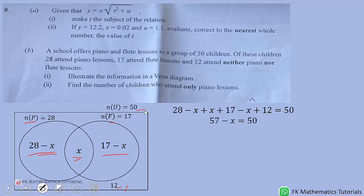And equate it to 50. When we simplify, we get 57 minus x equal 50. So, x will be equal to 7. The number who attend only piano lesson will be 28 minus 7, which is 21 children.